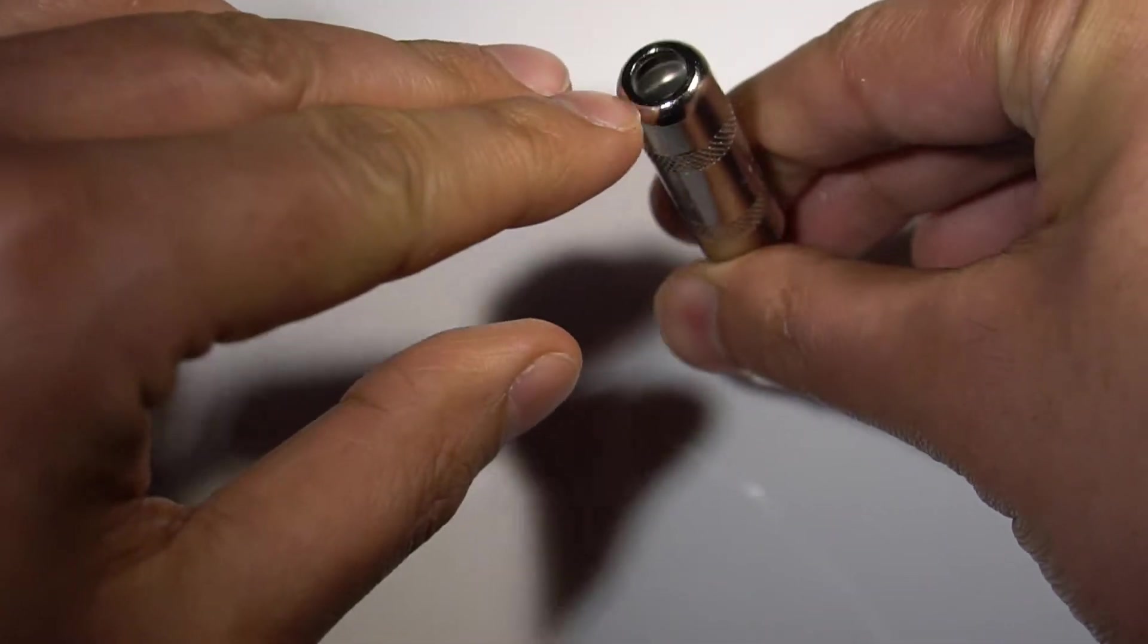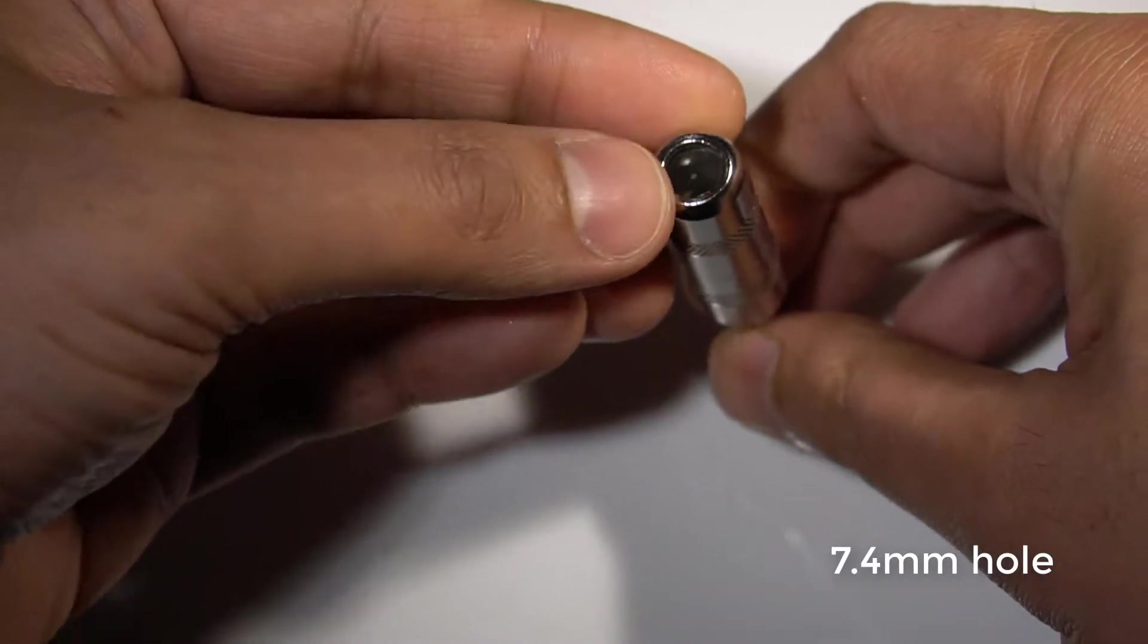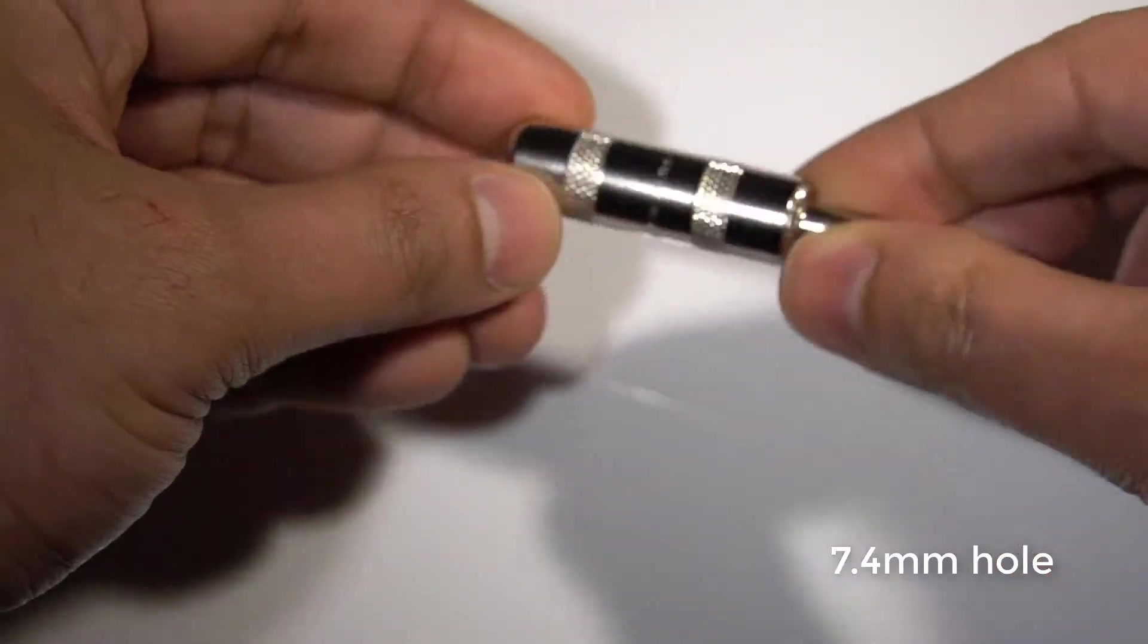The hole at the back is quite large as well. I think it's about 6mm, but I'll measure it, so yeah, you can put a really fat cable in there if you wanted to.